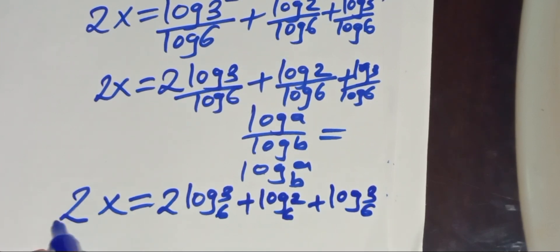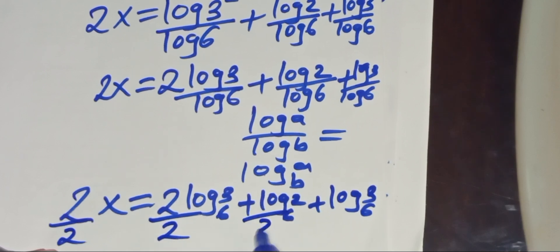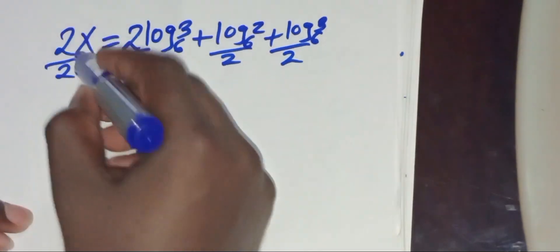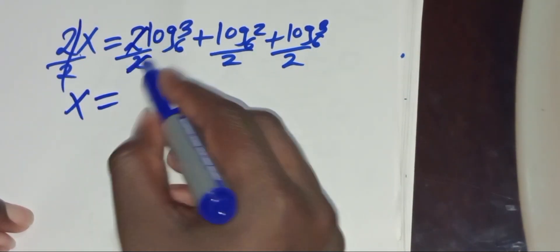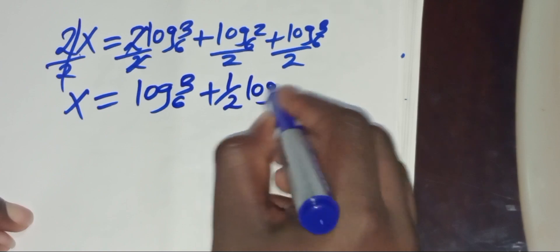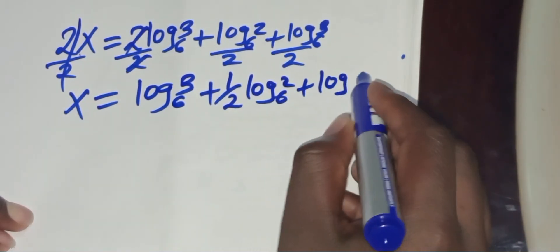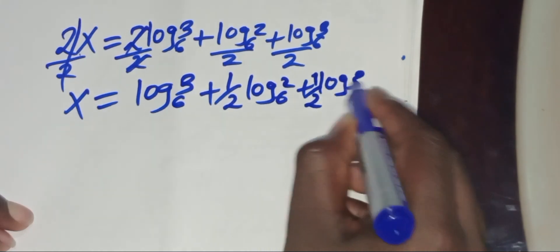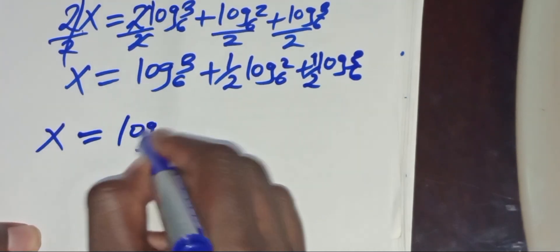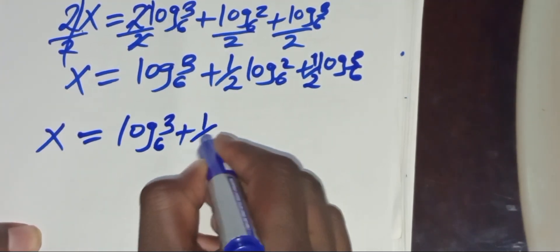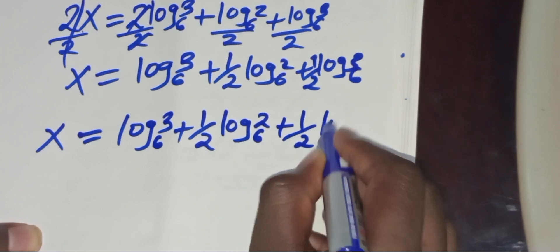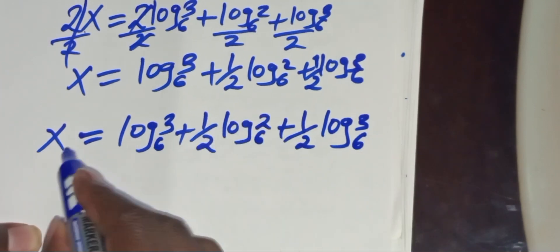Now let's divide both sides by 2, so that the value of x equals: simplifying, we have 2/2 gives x equals log₆(3) plus one-half·log₆(2) plus one-half·log₆(3). Simplifying further, x equals log₆(3) plus one-half·log₆(2) plus one-half·log₆(3). This is the value of x.